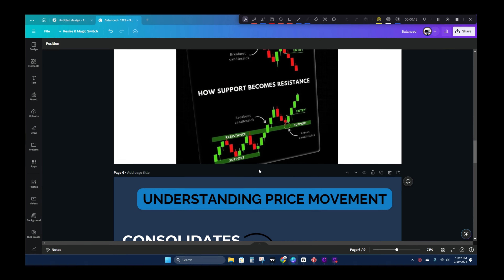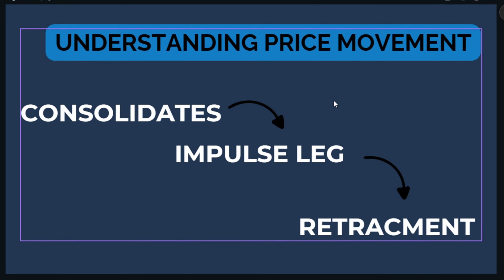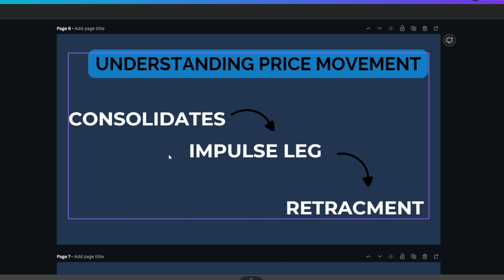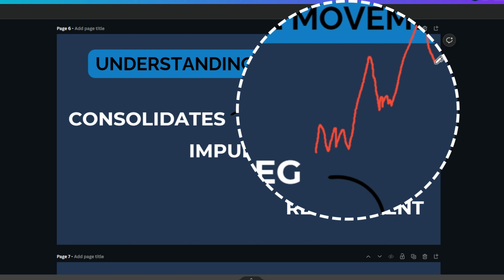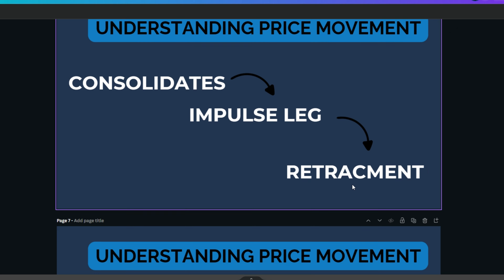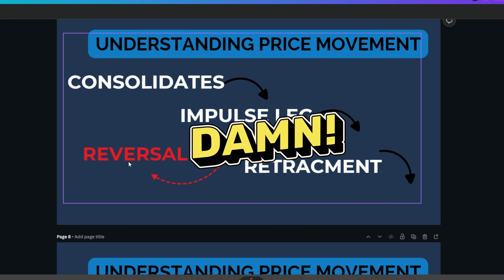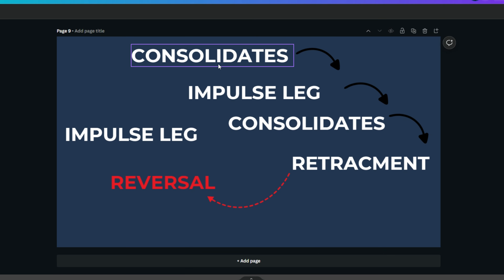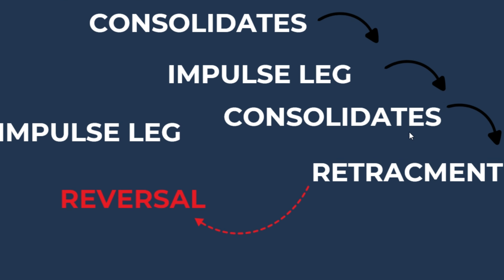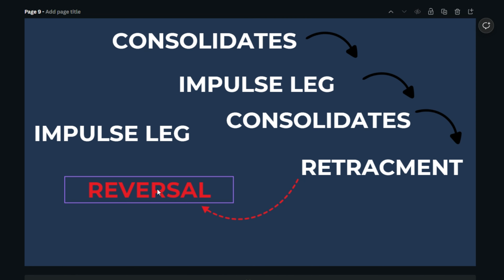There are four basic things that price does at any given time that you can identify to understand which phase price is in. Price consolidates, has an impulse leg, then you get a retracement. Price then consolidates again — consolidation, move up, retracement, consolidation. Eventually you'll think it's going into a normal retracement, but then you're slapped with a reversal that takes out that low, and then it repeats.